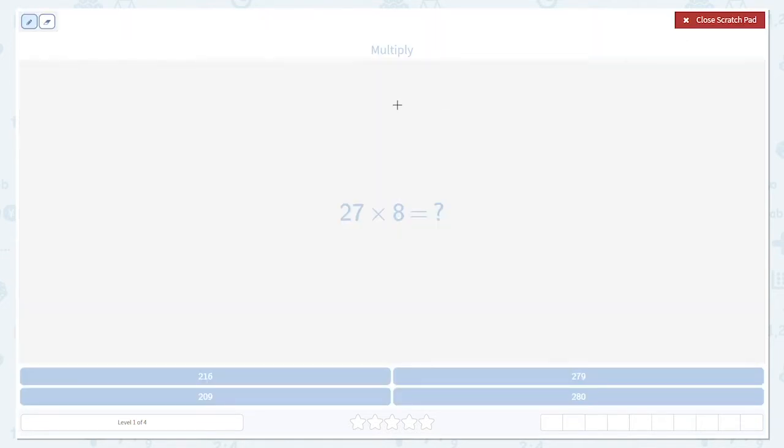Here's a good one to get us started. 27 times 8. Always write the bigger number on top. 27 times 8. Do 8 times 7. That's 56. So we write a 6. Carry the 5.